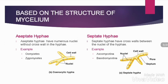On the basis of the structure of the mycelium, fungi are classified into aseptate hyphae or septate hyphae. The hyphae collectively form a network known as mycelium, and each hyphae may vary in shapes and sizes. Aseptate hyphae have numerous nuclei without cross walls; examples include Oomycetes and Zygomycetes.